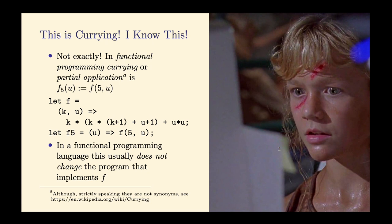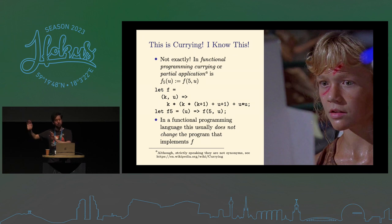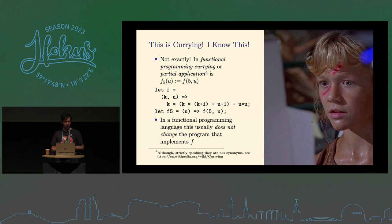Let's say we have function F(K, U) defined as K*K*K + 1 + U + U*U. The currying or partial application of this function with K equal to 5, which we call F5, would be a function that takes U and calls F(5, U). That partial application technique doesn't actually change the text of the program.